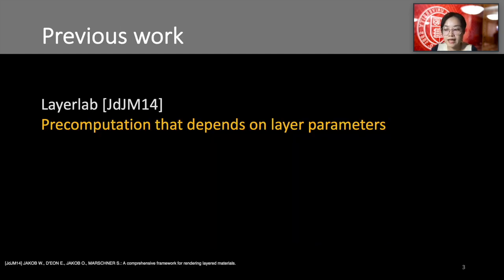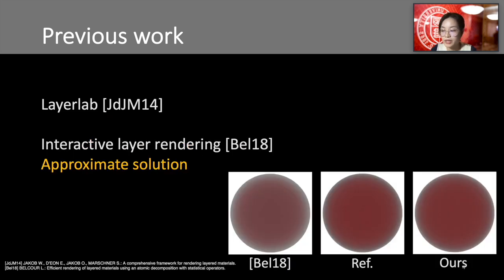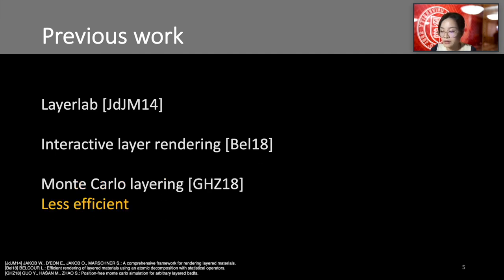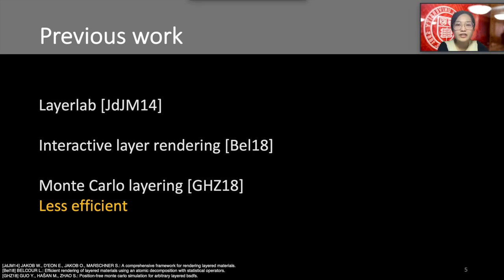Among them, LayerLab converts BSDFs to a tabulated representation and computes the layer BSDF numerically. It is accurate and general, but requires a precomputation that depends on layer parameters. Belcore introduced an interactive rendering solution that composes layers by estimating the statistics of the combined BSDF and representing the result as the sum of GGX slopes — an efficient but approximate solution. Guo et al. proposed a general, accurate, and precomputation-free method using Monte Carlo integration to estimate the value of the layered BSDFs. We also concurrently and independently developed the Monte Carlo layering framework based on the position-free assumption; however, their work came out a little bit earlier than ours.